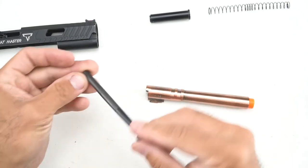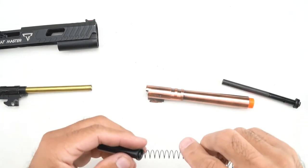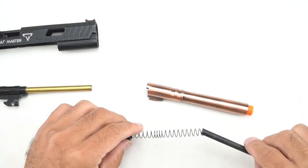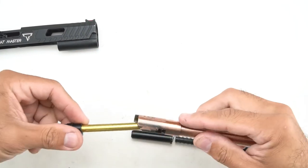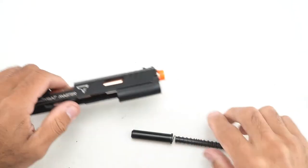If your guide rod is two-piece like this one here, be sure to tighten down any set screws to reassemble. Just reverse the order there. Put the inner barrel back into the outer barrel assembly, then into the slide.